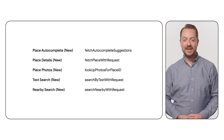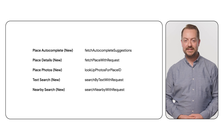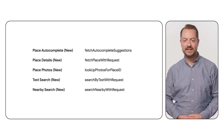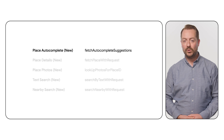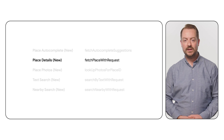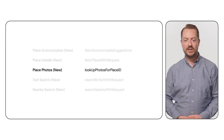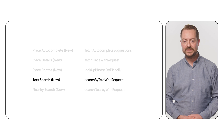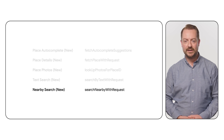Once your app is using the SDK, Places new can be accessed by calling the relevant method on the GMS Places client object. For autocomplete, use fetchAutocompleteSuggestions. For place details, use fetchPlaceWithRequest. For place photos, use lookupPhotosForPlaceID. For text search, use searchByTextWithRequest. And for nearby search, use searchNearbyWithRequest.